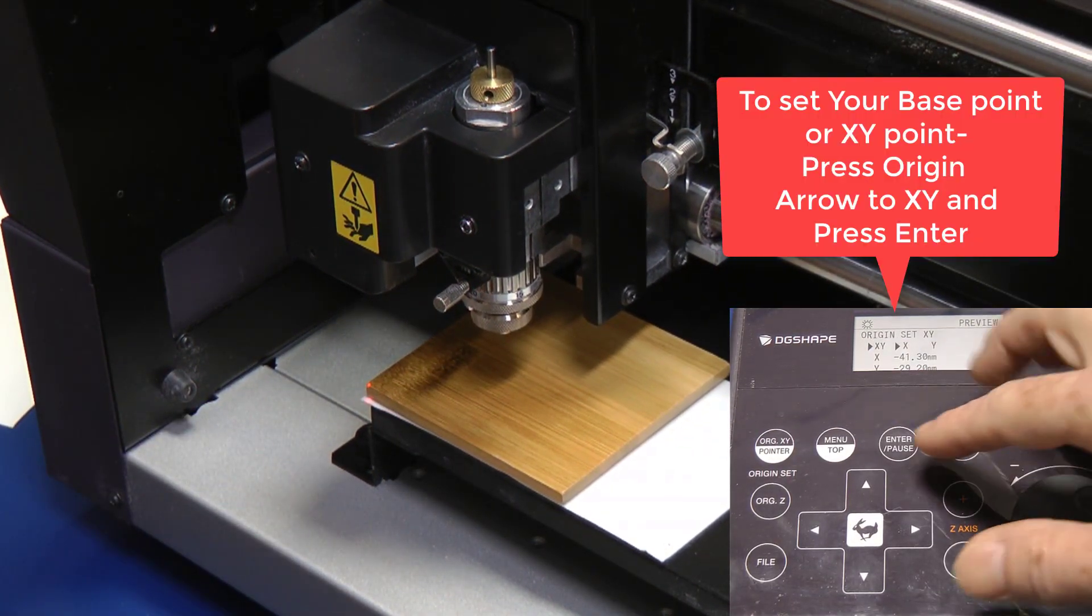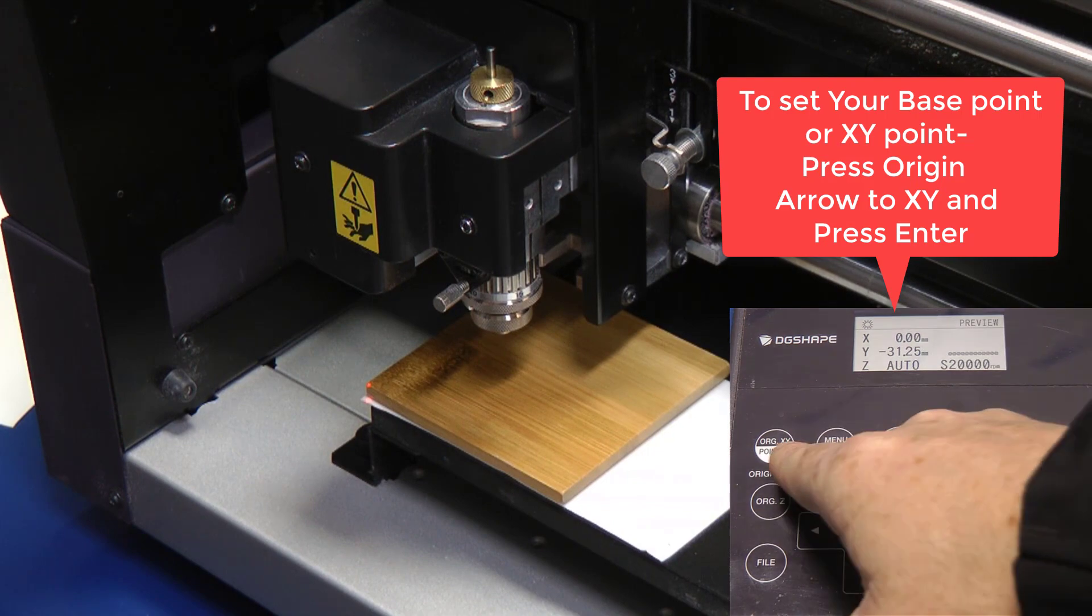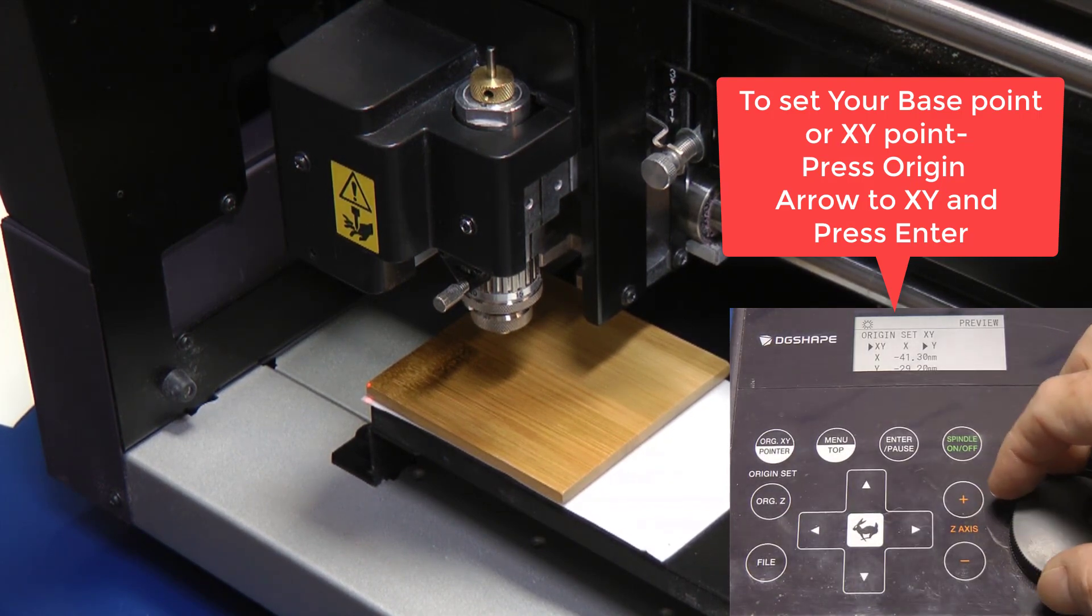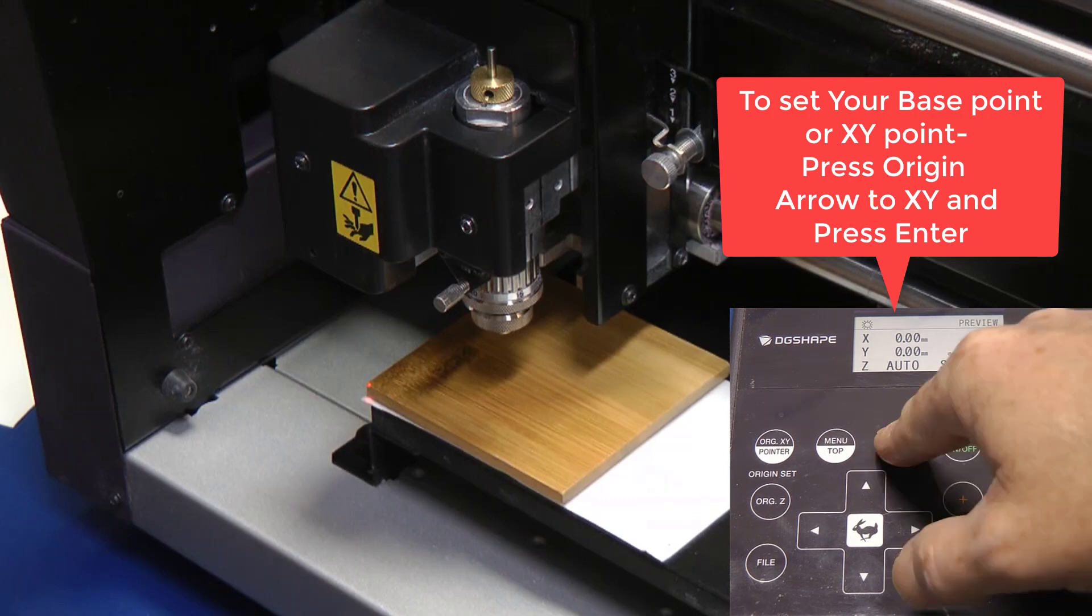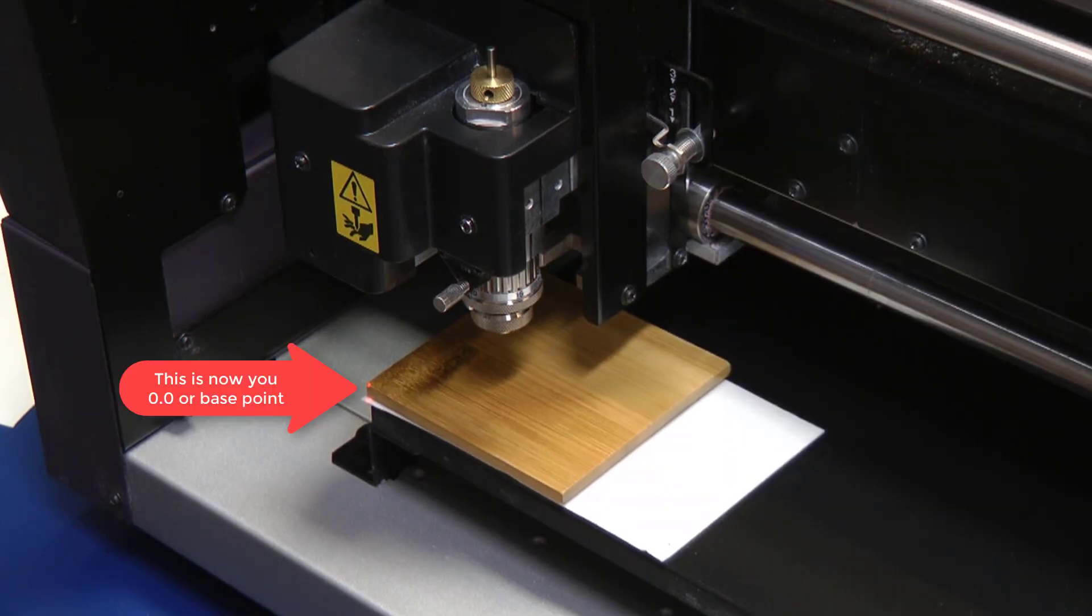Press origin, arrow to X and Y and then hit enter. This will zero out our base point. This is now your zero zero or base point.